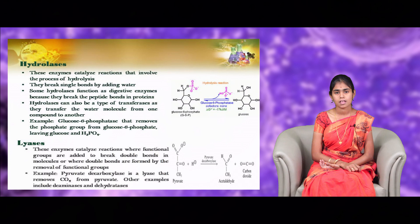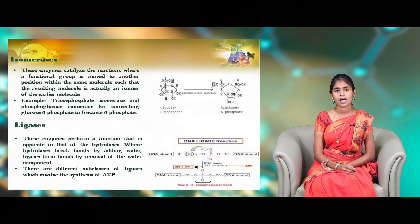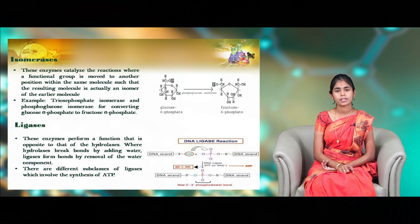Coming to lyases — they catalyze the addition or deletion of molecules like water, carbon dioxide, and ammonia. For example, during glycolysis it removes CO2 from pyruvate. Isomerases have the capacity to convert one isomer to another and also facilitate intramolecular rearrangements. This enzyme binds with one substrate to give only one product.